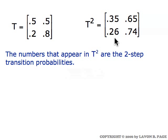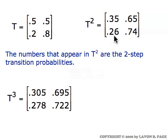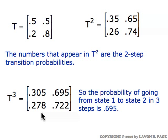So for example, 0.26 would be the probability of going from state two — because we're in the second row — to state one — because we're in the first column — in two steps. In a similar fashion, 0.278 would be the probability of going from state two to state one in three steps. The probability of going from state one to state two in three steps: we look in row one, column two — 0.695. That's a third-order transition probability.